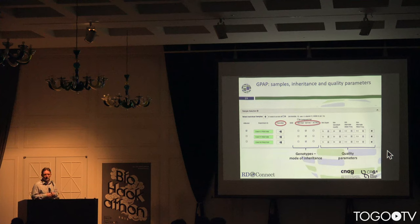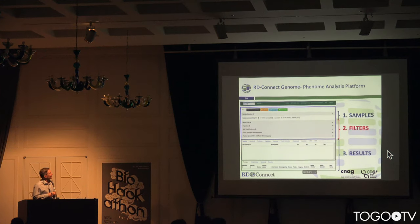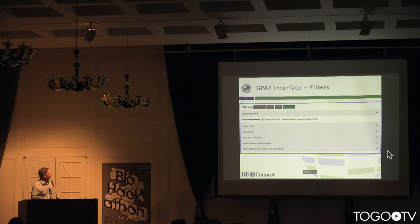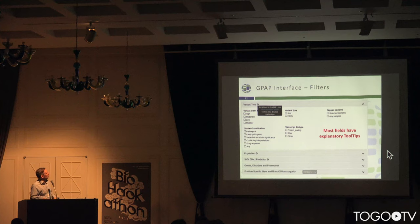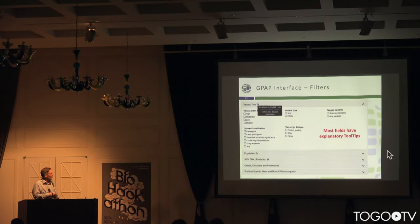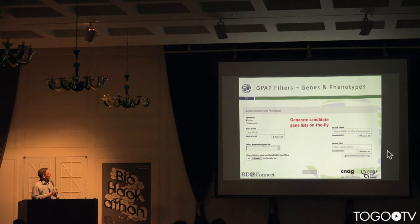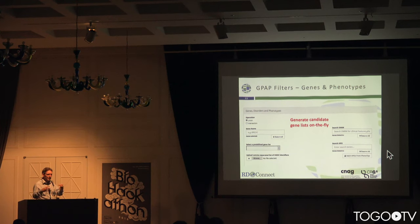We've made the mode of inheritance very flexible so that you can look for any types here — defined by genotype — and we have various quality control measures. Then we have a range of filters. You apply a variety of filters to cut down from several million variants down to a shortlist, hopefully in the tens. Most of the fields have explanatory tooltips so the user can understand what they do. We can also generate candidate gene lists on the fly by pulling in the HPO terms from phenotypes, uploading predefined gene lists, or making intersections of these lists.